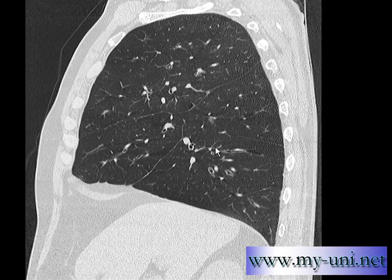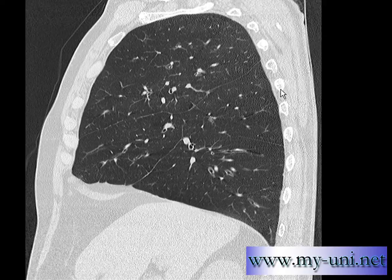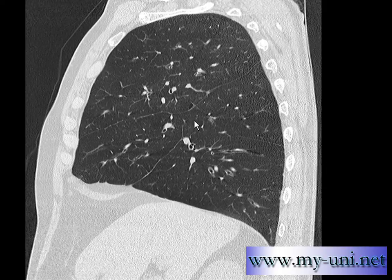This is a set of images reconstructed as sagittal images. They are equivalent to a lateral view. The difference is they are in slices, and for that reason they have much better definition for the anatomy and for any pathology. This is the anterior side of the patient, this is the posterior side, these are ribs, this is the superior aspect, this is the inferior aspect, and this is the diaphragm.